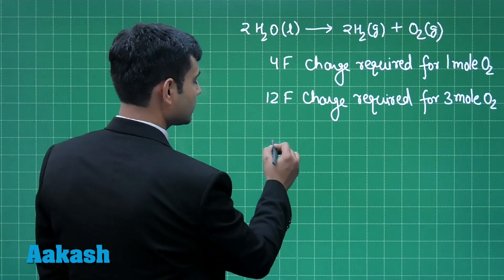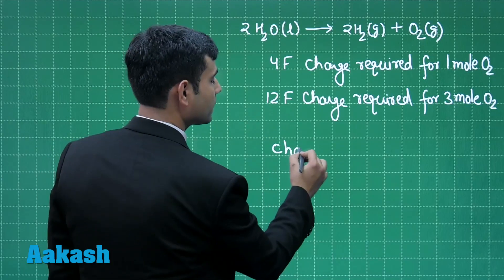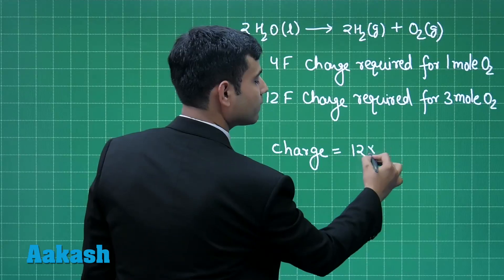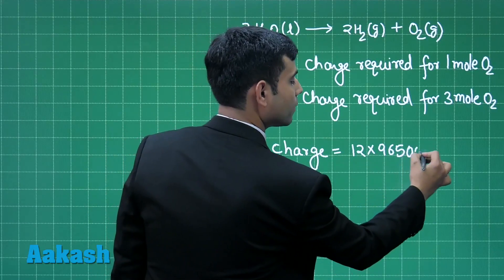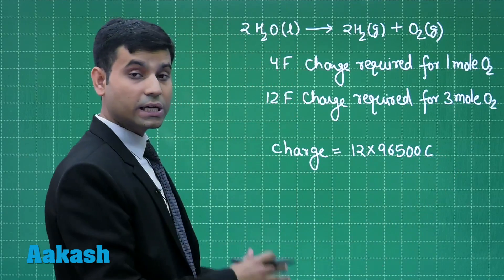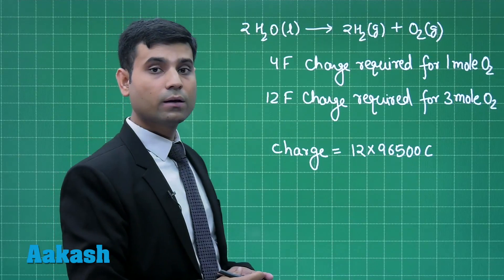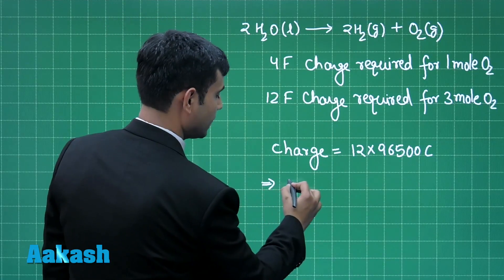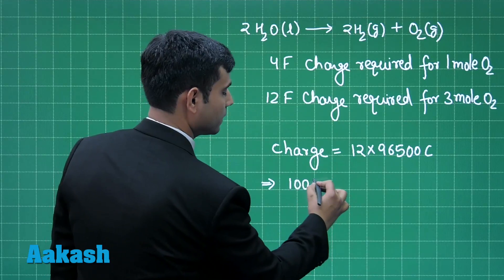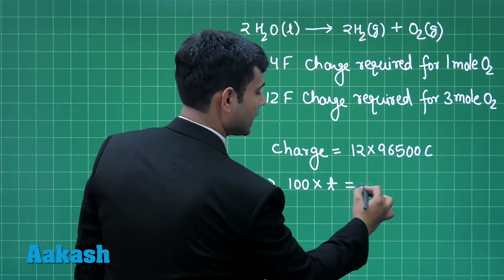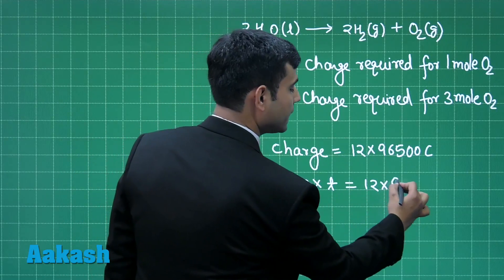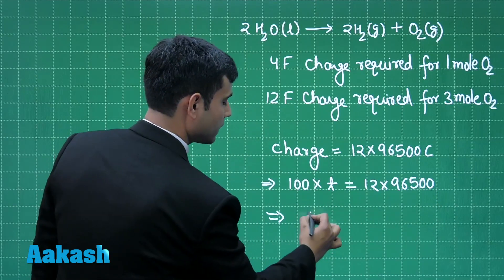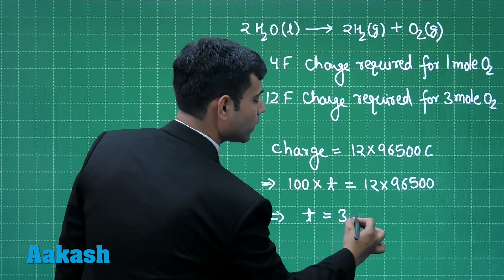So, in coulombs, the charge will be equal to 12 into 96500 coulomb. Also, the charge equals current into time. So, current is given 100 amperes into time, that will be equal to 12 into 96500 coulomb. On solving, it gives us the time equal to 3.2 hours.